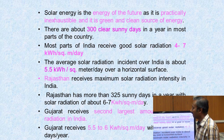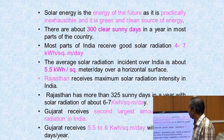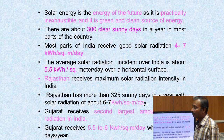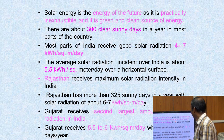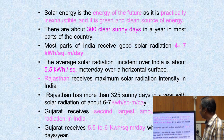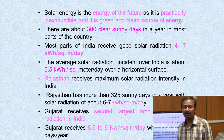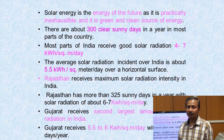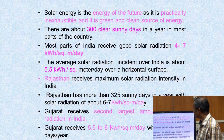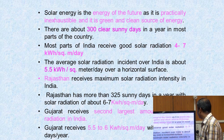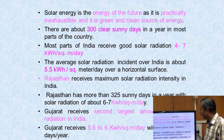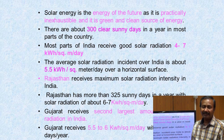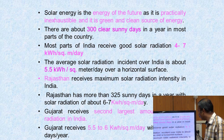Solar energy is the energy of the future. It is practically inexhaustible and easily available throughout the world, and in India it is also easily available. There are around 300 clear sunny days in a year in most parts of the country. Most parts of India receive good solar radiation of around 4 to 7 kW per m² per day, which is sufficient for harnessing solar energy and developing different types of equipment. The average solar radiation incident over India is about 5.5 kW per m² per day over a horizontal surface. Rajasthan receives maximum solar radiation intensity in India, around 6 to 7 kW per m² per day.